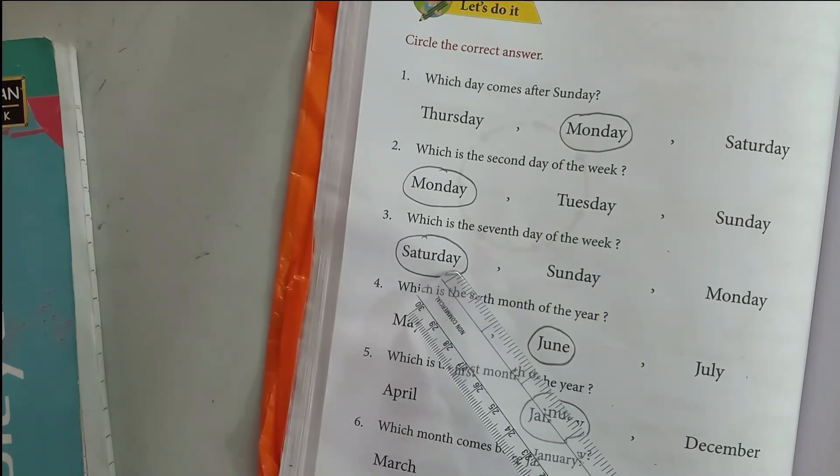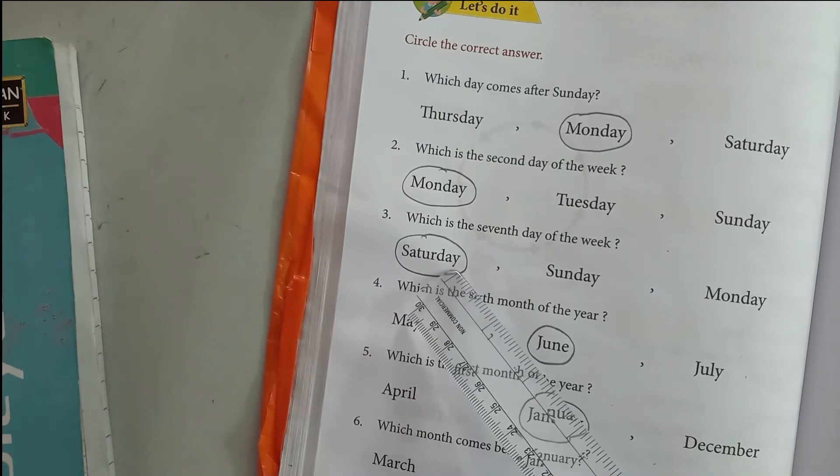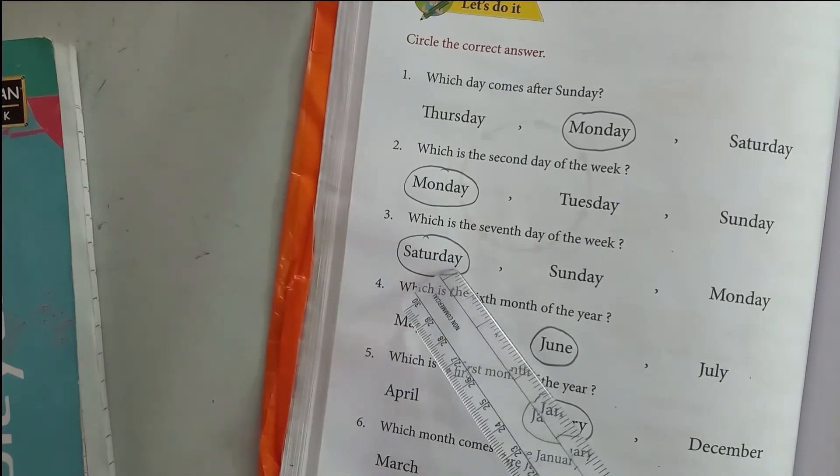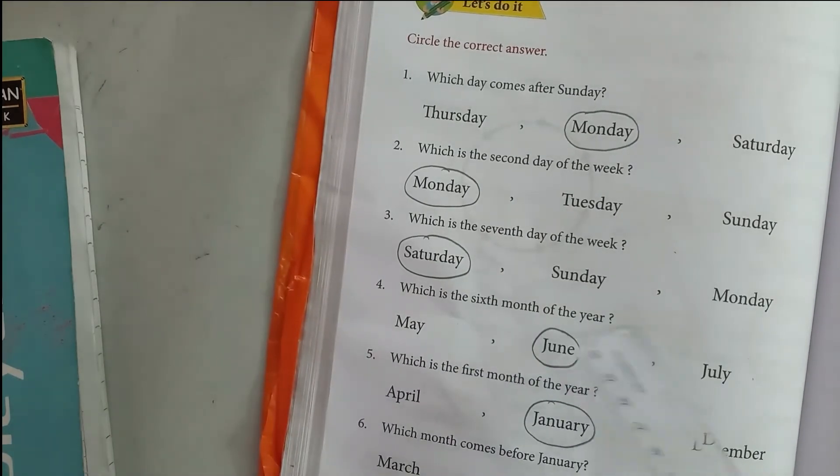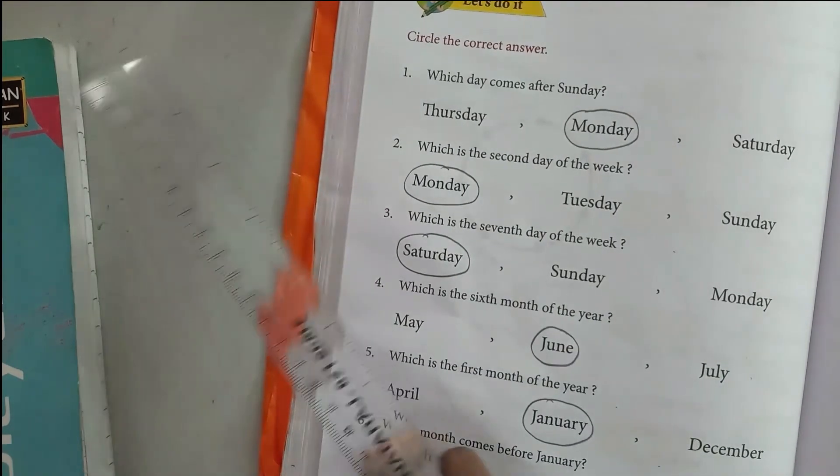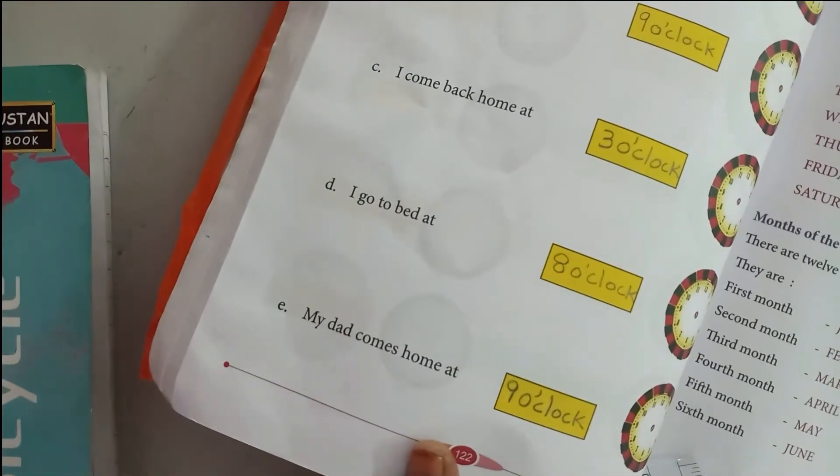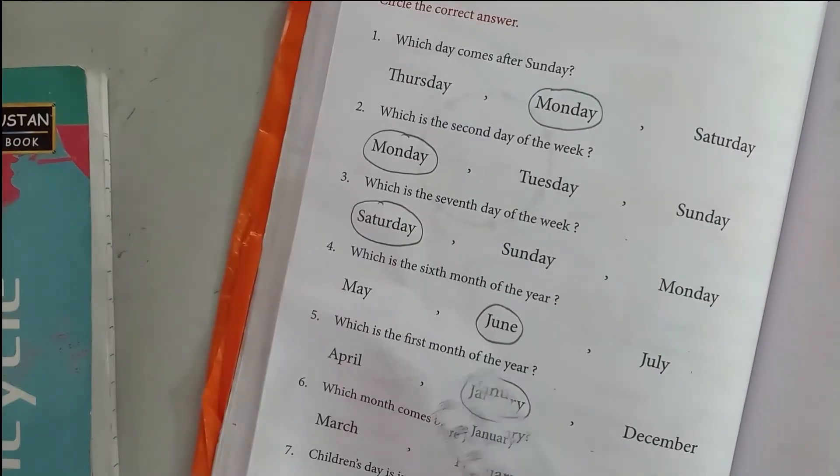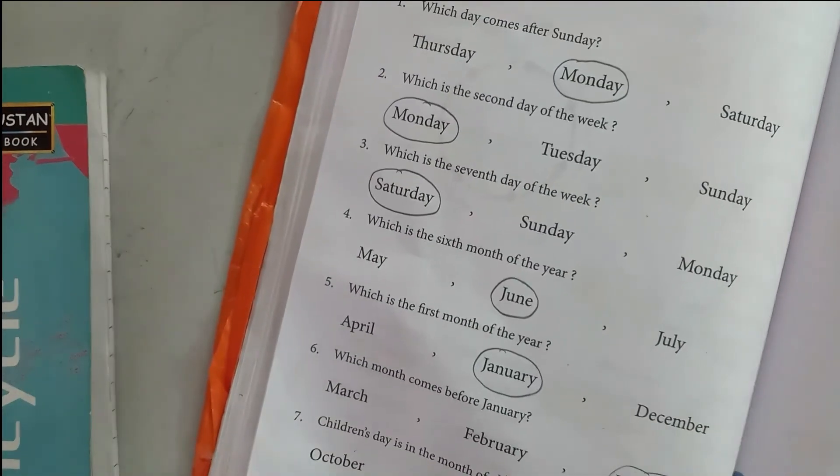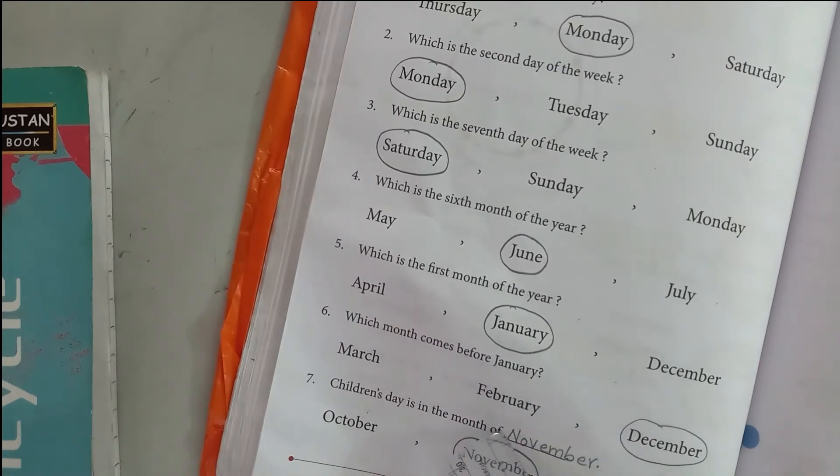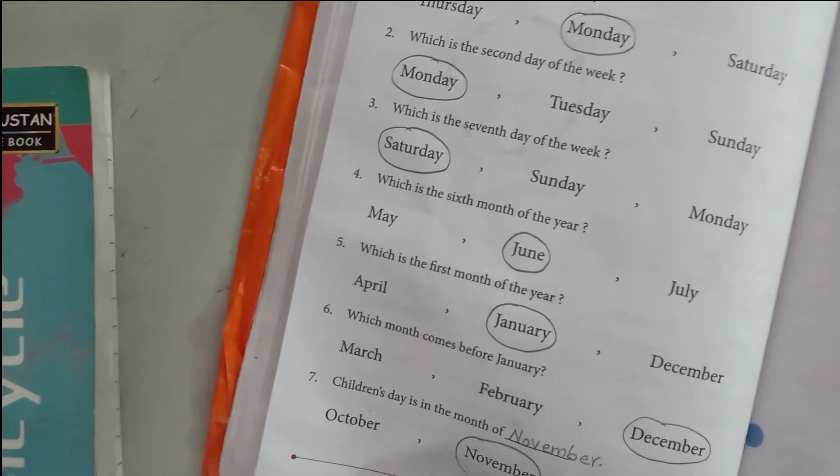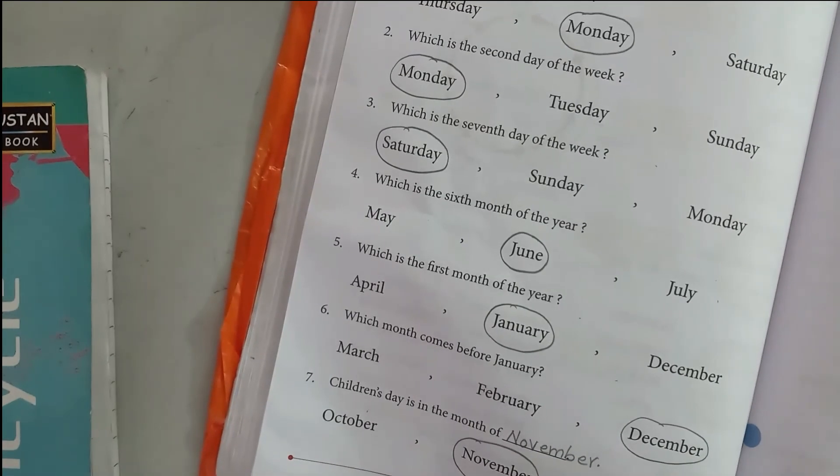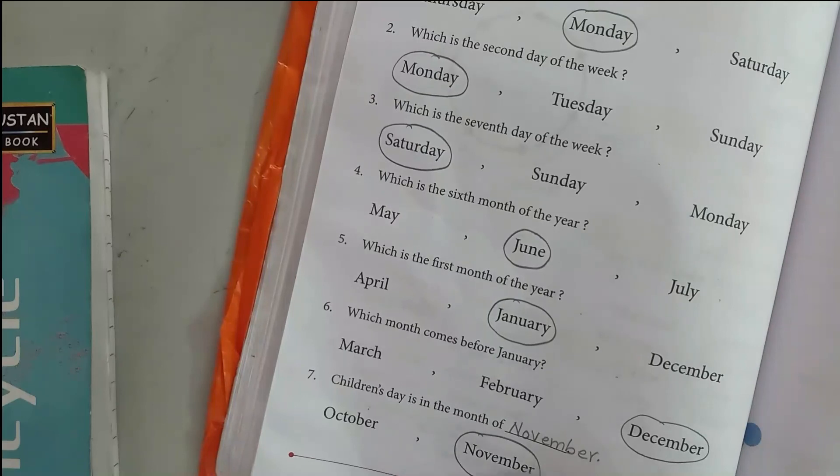Which is the 6th month of the year? June. Which is the 1st month of the year? January. Which month comes before January? December. Children's day is in the month of November, so circle November.